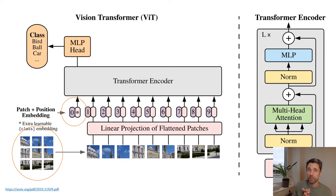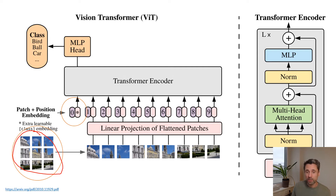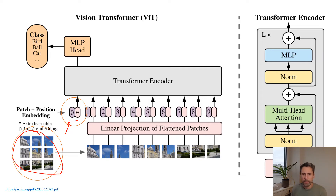Vision transformers are basically NLP transformers, and they only differ in two things: the way they break down the input image into patches, and this classification token that was introduced in the BERT paper. The input is broken down into non-overlapping patches of size P times P. Each of these patches is three channels times P times P.